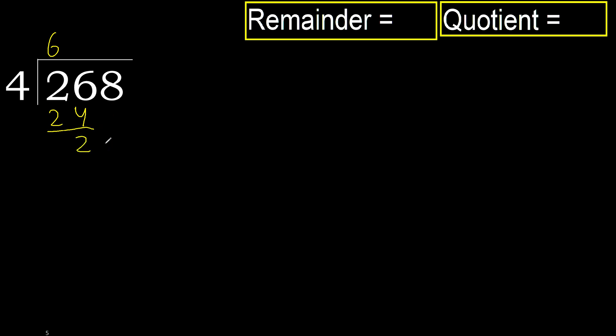Next: 28. 4 multiply by 7 is 28, 28 is not greater. Ok, subtract.